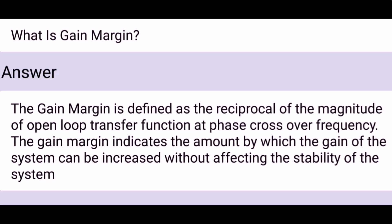What is gain margin? The gain margin is defined as the reciprocal of the magnitude of the open loop transfer function at the phase crossover frequency. The gain margin indicates the amount by which the gain of the system can be increased without affecting the stability of the system.